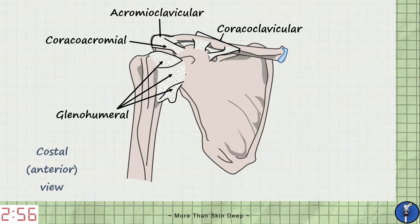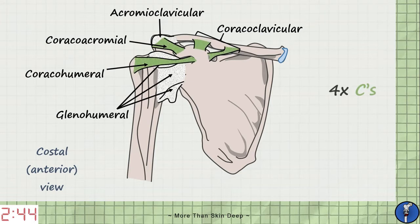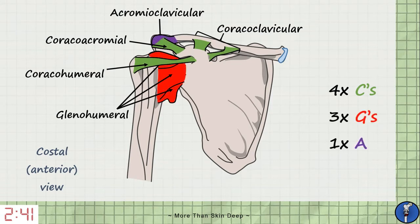And finally to attach the coracoid process to the humerus we have the coracohumeral ligament. Now if you can remember the names of these structures then you can work out their attachments very easily. To help you remember their names recite the mantra: four C's, three G's, and an A. That way you've got all the shoulder ligaments covered.